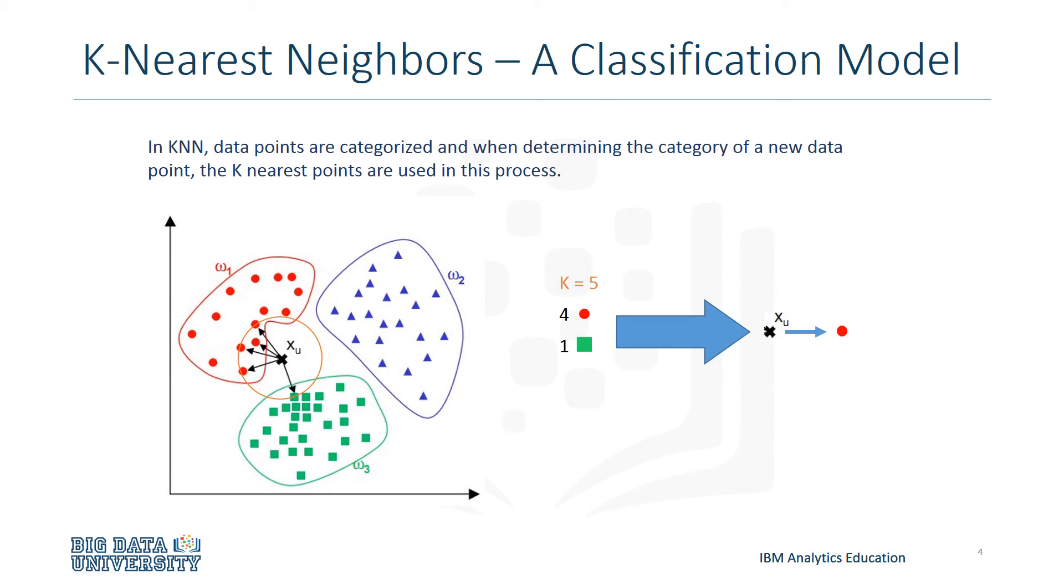For the classification of this point in this case, we have four red points and one green point. Therefore, x-u would be classified as a red point.